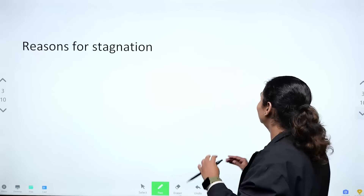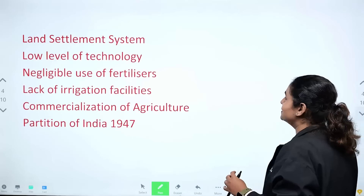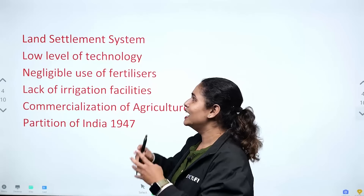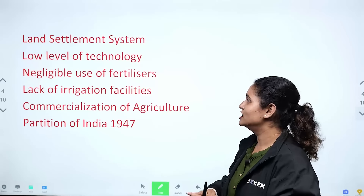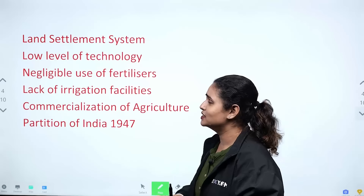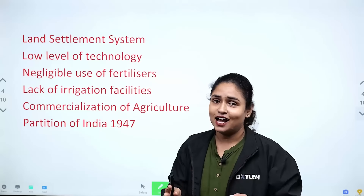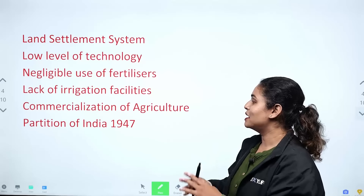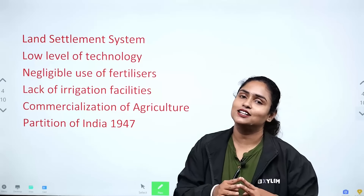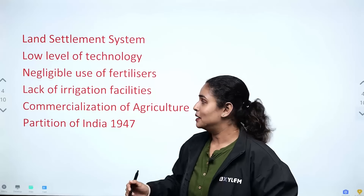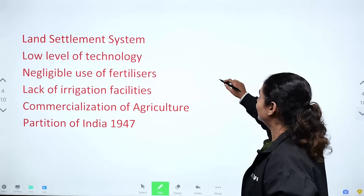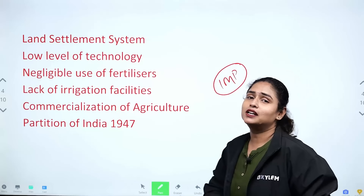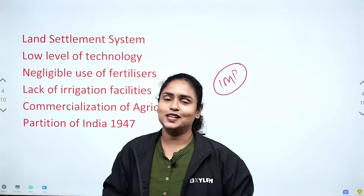The points to learn include the land settlement system, low level of technology, negligible use of fertilizers, lack of irrigation facilities, commercialization of agriculture, and the partition of India in 1947.